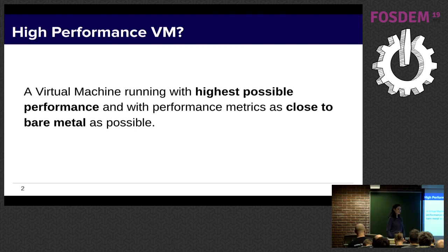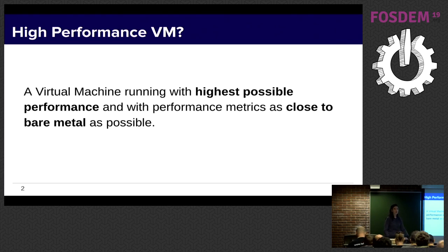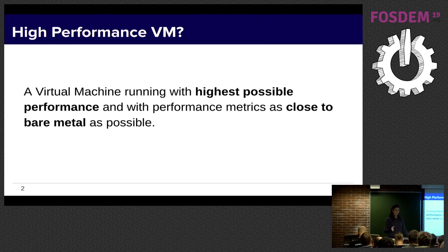Let's start by understanding what a High Performance VM is. A High Performance VM is actually running a VM with the highest possible performance and with performance metrics as close to bare metal as possible. When we talk about high performance, we are talking about the amount of operations that can be done in a given amount of time — and of course we want a higher amount of operations, as much as we can.